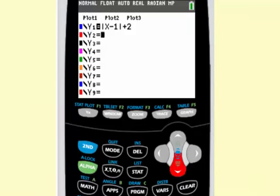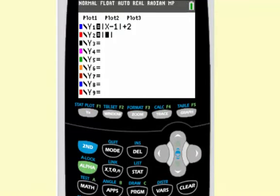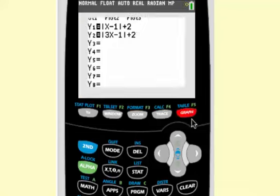And our g of x is absolute value of 3x minus 1 and then plus 2. Graph.